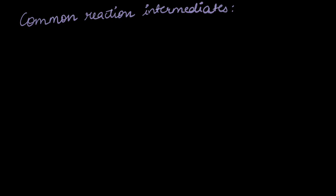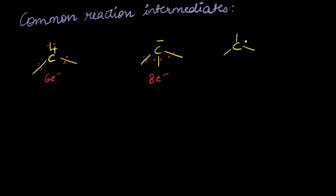The common intermediates found in a reaction mechanism are carbocation, carbanion, and free radical. In a carbocation the carbon atom has six electrons around it — each bond has two electrons. In the carbanion, each bond again has two electrons, and two electrons make up the negative charge, so the carbon has eight electrons. In a free radical there are seven electrons around the carbon atom.